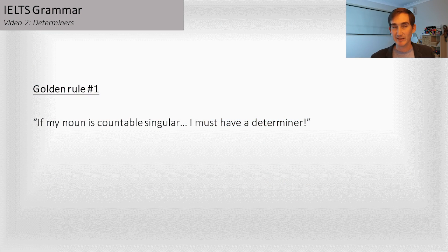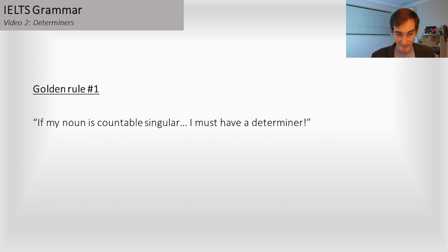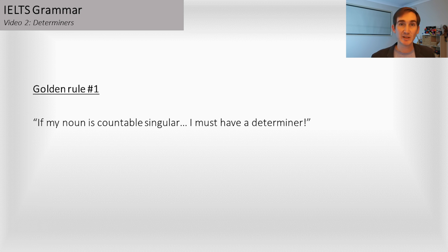Here's a golden rule for you — something to keep in mind. The rule is: if my noun is countable and singular, I must have a determiner. Something you can edit for — if you ever see a countable singular noun, there has to be a determiner before it. It might not be a, an, or the. It might be one of those other determiners or a possessive, but there must be some kind of determiner before it.